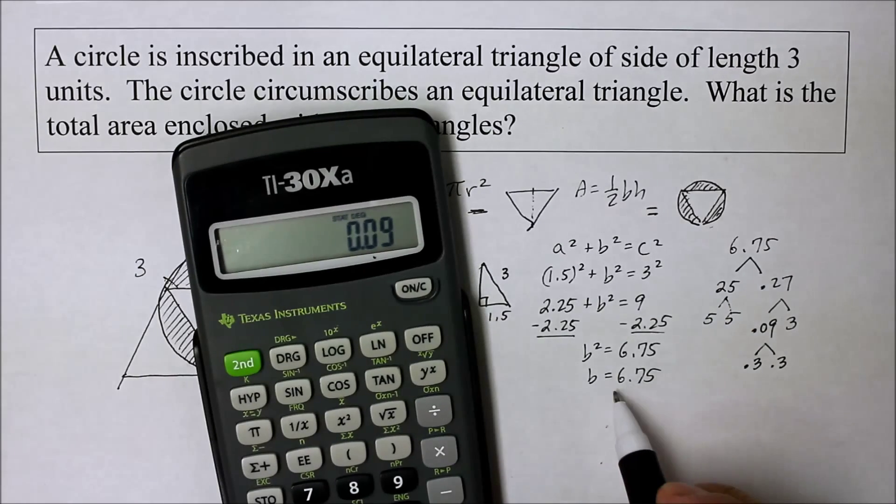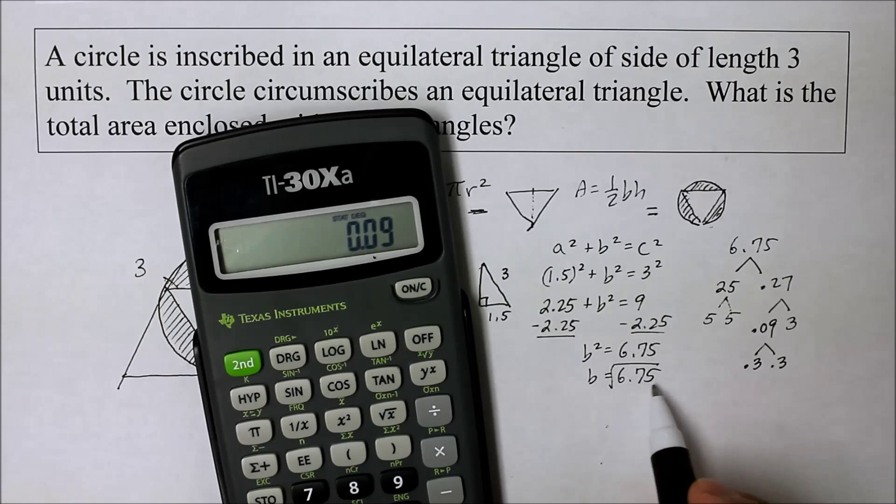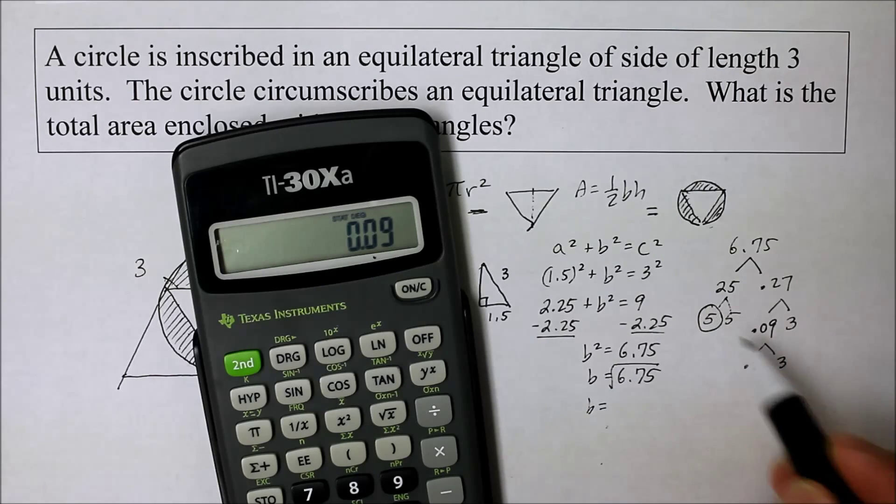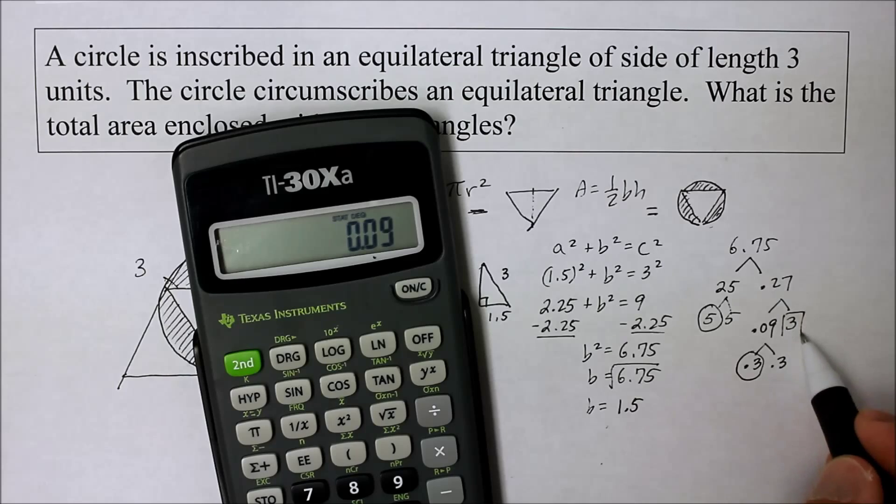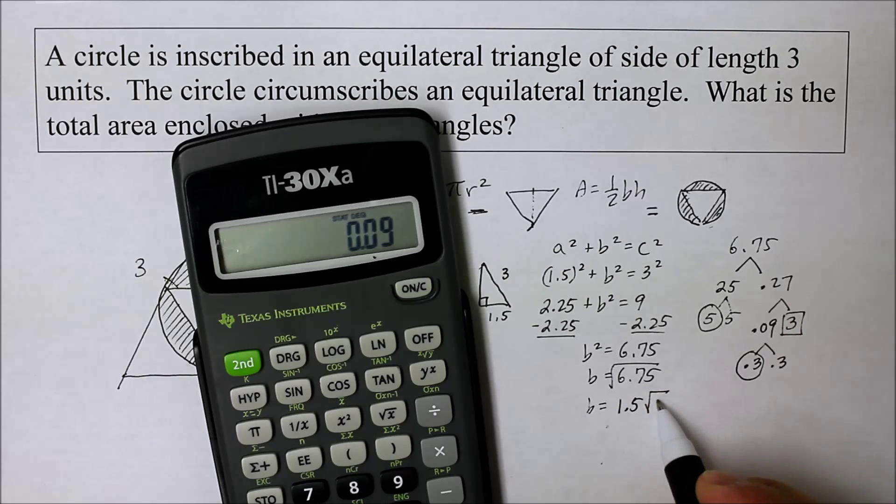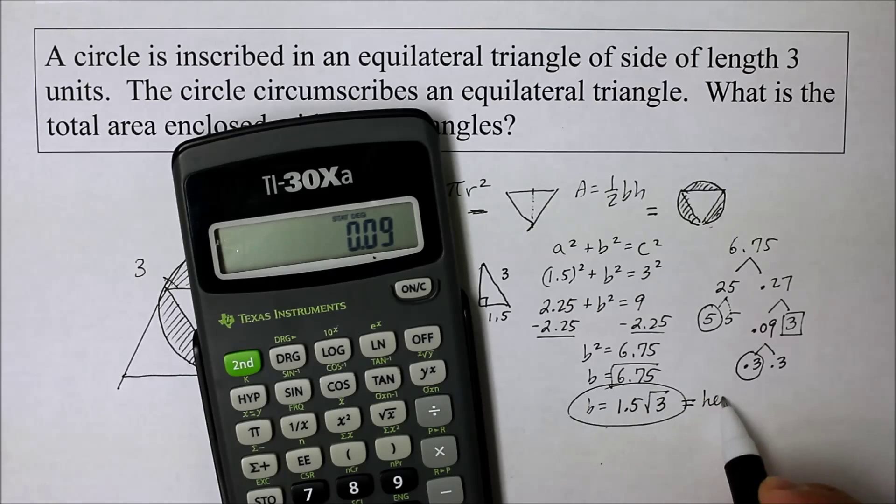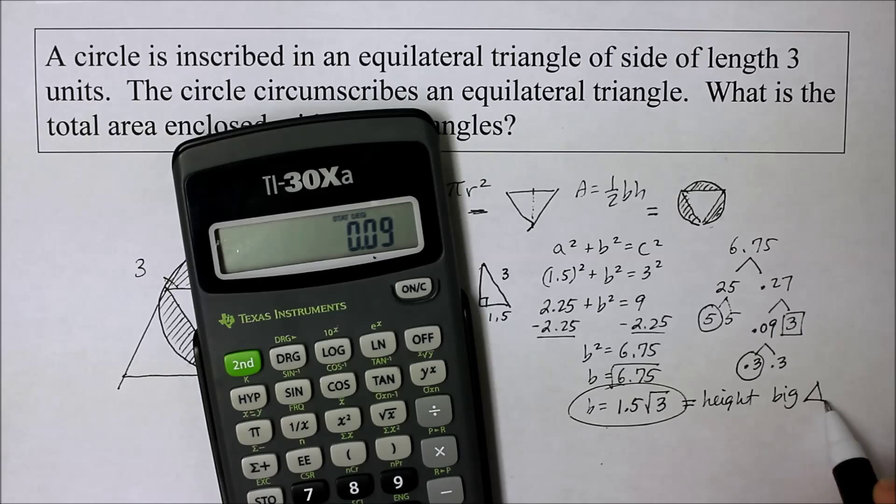So what is the square root of 6.75? It is made up of 5 and 0.3 which is 1.5. And what remains is a square root of 3. So that's the height. This happens to be the height of the big triangle.